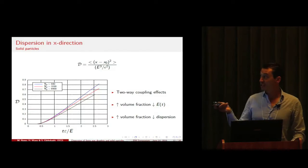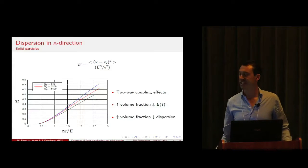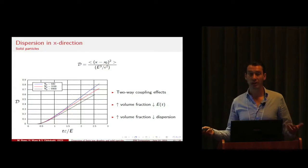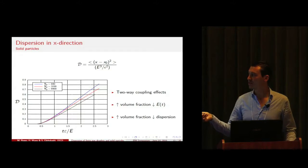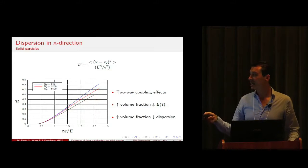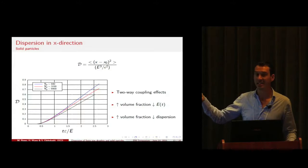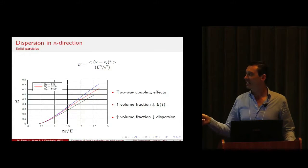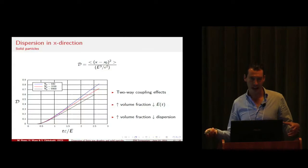First let's look at what happens to the dispersion of solid particles when the volume fraction is increased. This is well known in literature. By increasing the volume fraction, the turbulent kinetic energy decay rate decreases, and so does the dispersion. This has been explained as the effect of the two-way couplings between the surrounding flow and the droplets.